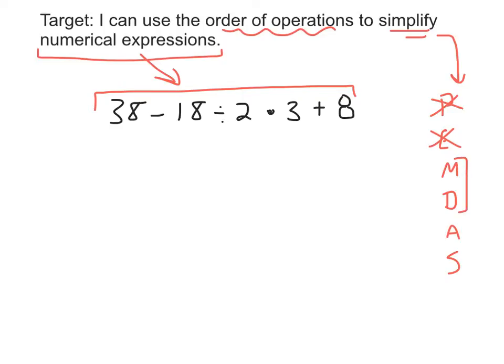One of the tricky things about multiply and divide is that they happen together, from left to right. Multiply does not come before divide. So in this problem, I wouldn't jump forward to this multiplication. I would look at the problem and look for multiplications and divisions from left to right. The first thing I see is a division — 38 minus 18 divided by 2 times 3. The division comes before the multiplication, so I'm going to solve that part first and rewrite the problem.